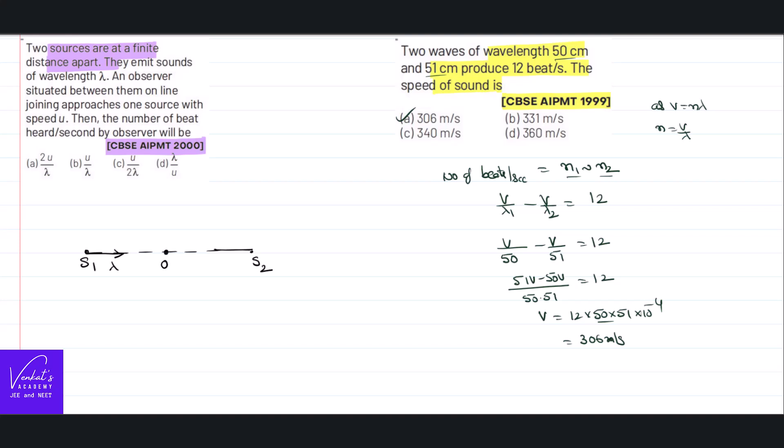So here is an observer somewhere. Line one approaches one source with the speed u, so he may be moving forward with a velocity u. Then the number of the beats heard by him, see as he is approaching the source two, this is like source in the state of rest.